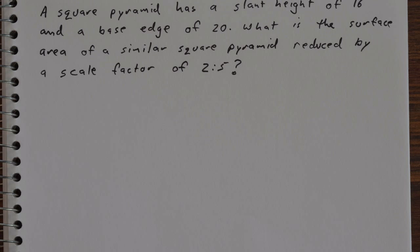Next example, got a bit cut off there. A square pyramid has a slant height of 16 units and a base edge of 20 units. So we've got the square pyramid, and we want the surface area of a similar square pyramid that's been reduced by a scale factor of 2 to 5.